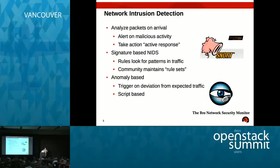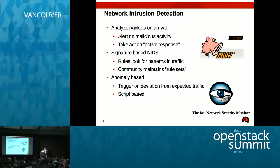Another IDS is called Bro, which is anomaly-based. It learns normal traffic and sends an alert when there's a deviation from that norm. It's also script-based, almost like a programming language, allowing extremely complex analysis. I've found it a little complicated to use, but the techniques I'll discuss will be applicable to Bro as well.